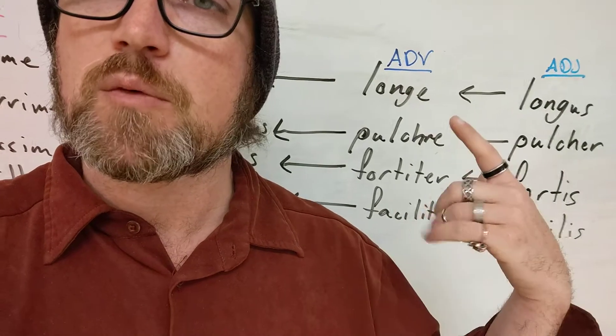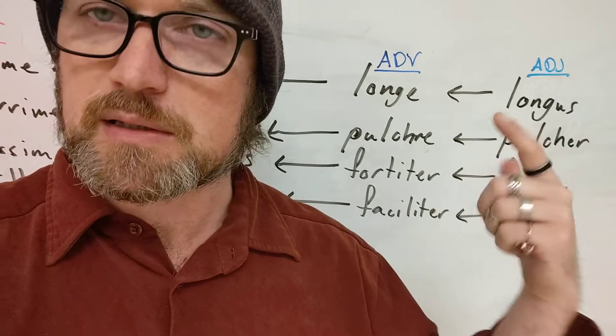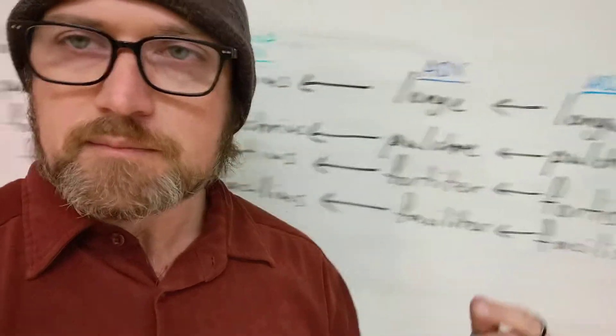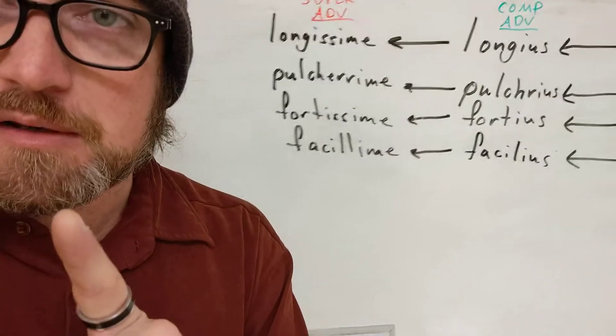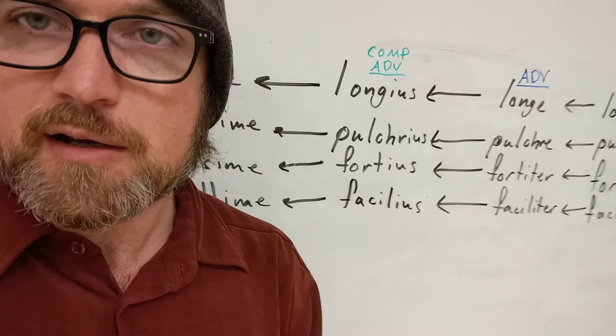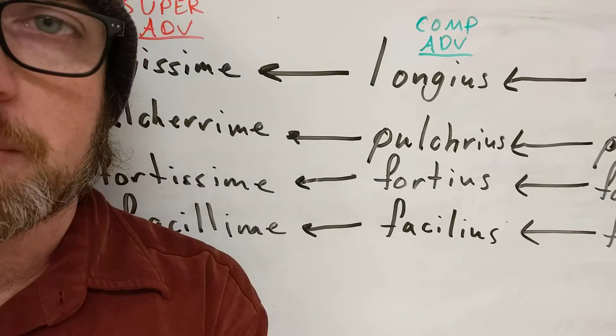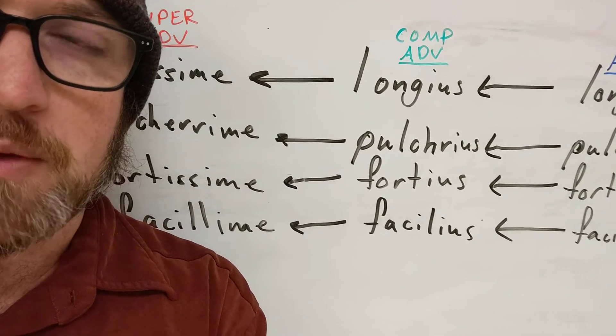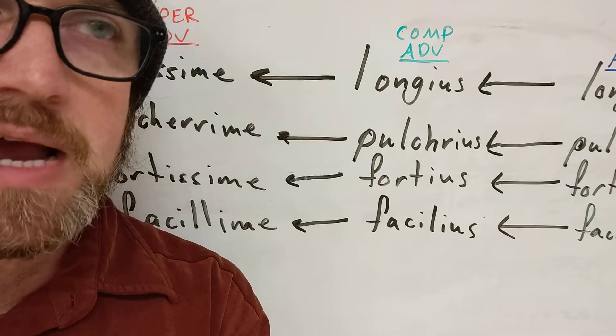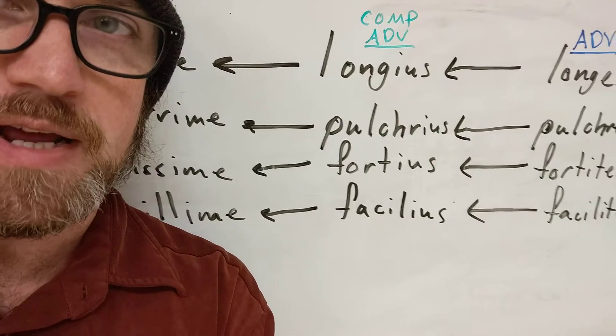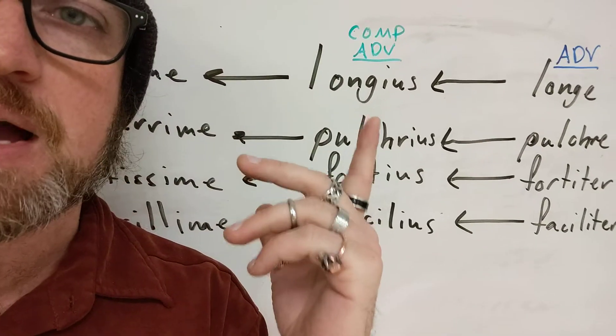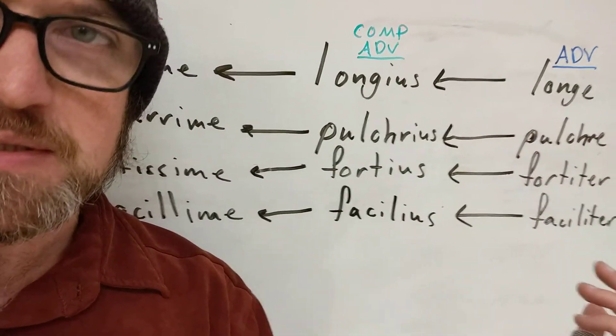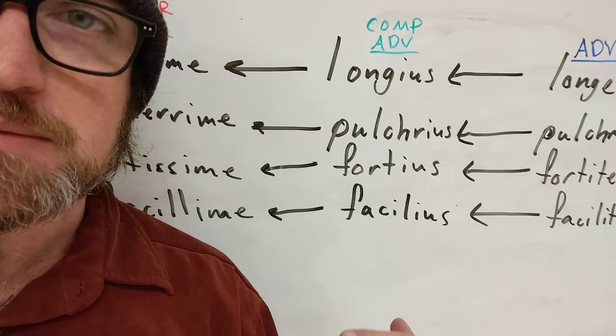But now if you wanna make them comparative, then you would say something was more, something was done more distantly, or more beautifully, more bravely, more easily. And yes, you're always gonna use more. We're not gonna say easlier. Now, here's the thing. When you make an adverb comparative, it's actually real simple. If you think back to the comparative adjective, the adverb looks exactly like the neuter form of that adjective. So you're just using ius, and it doesn't matter which word you're talking about. You use the stem, and then ius. That's it. It doesn't change.